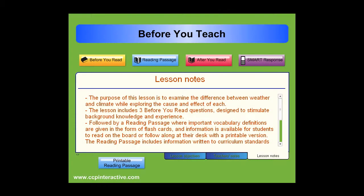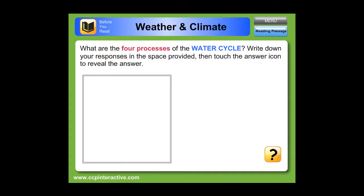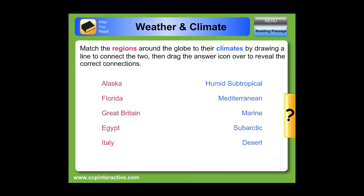Let's now get into the lesson. There are many different types of interactive questions that you can create with Smart Notebook software. This particular question allows students to pick up the interactive pen from the tray and write directly on the screen. We also chose to incorporate answers on the page for quick and easy testing.